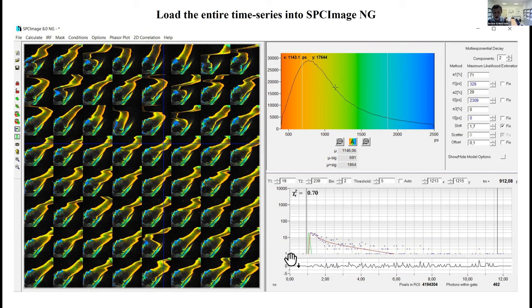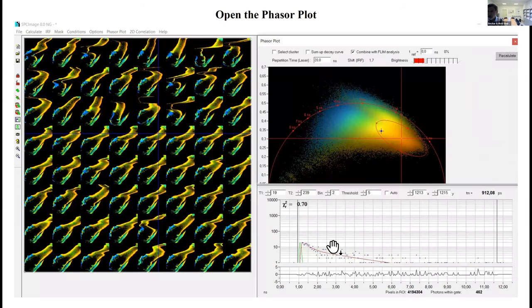As you see, the photon number in individual pixels is low. Okay, maybe it's a double exponential decay, but we can't say for sure. Next we open the phasor plot. We select a phasor range which corresponds to the color of the leg in the time domain images.